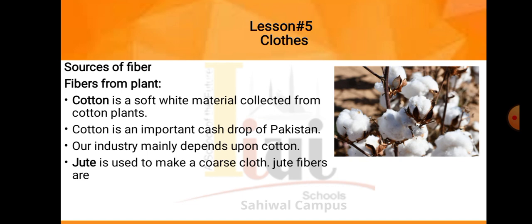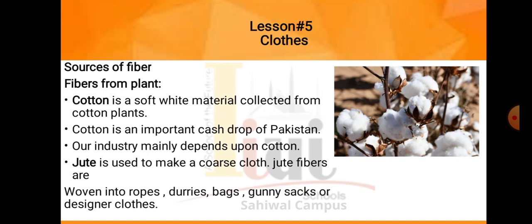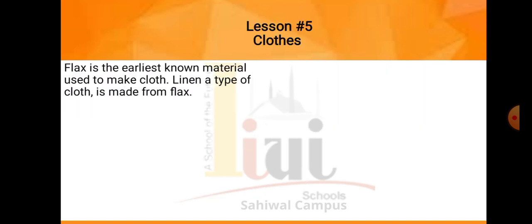Jute is used to make a coarse cloth. Jute fibers are woven into ropes, bags, gunny sacks, or designer clothes. Jute ek kapda hai jisko binaatay hai — aur yeh wala cloth jo hai, isse ropes banti hai, yani yeh jo rassiyan woghera hoti hai, bags woghera hoti hai. Is material se woh chizain banti hai. Next is flax. Flax is the earliest known material used to make cloth. Linen, a type of cloth, is made from flax. Flax bhi ek material hai jisse hum linen ka jo cloth hai woh bantatay hai.